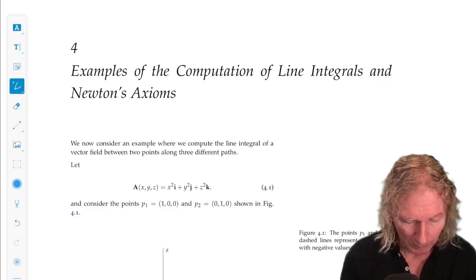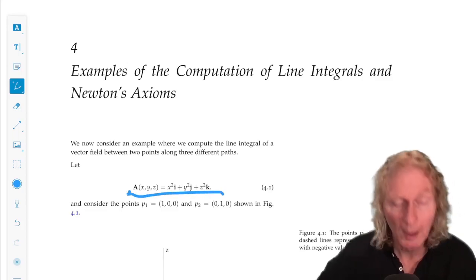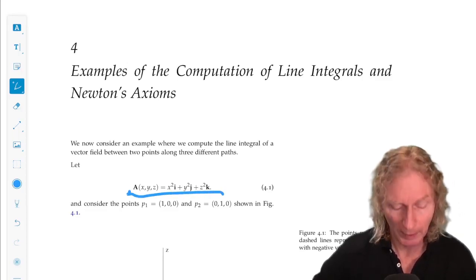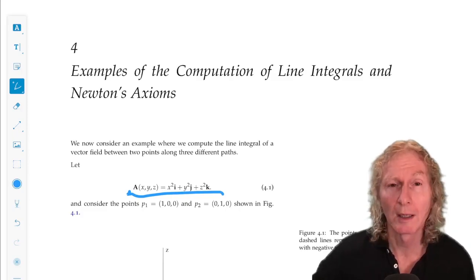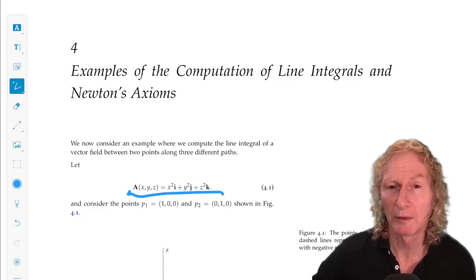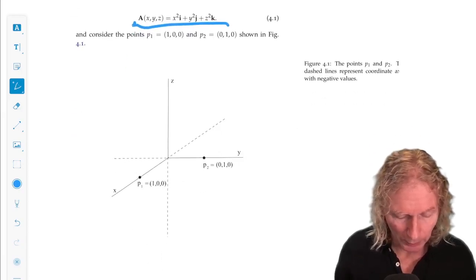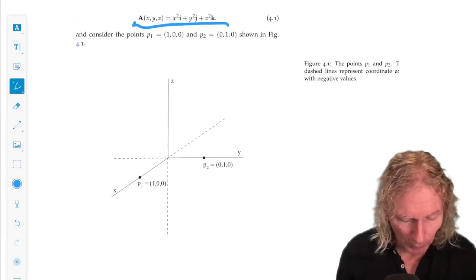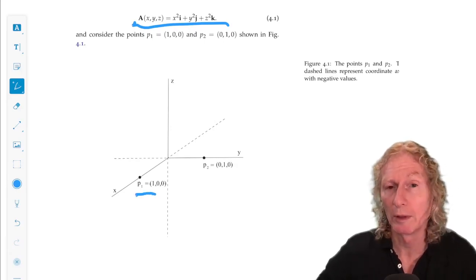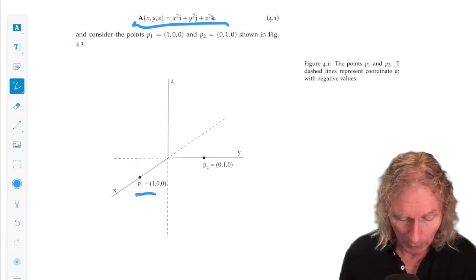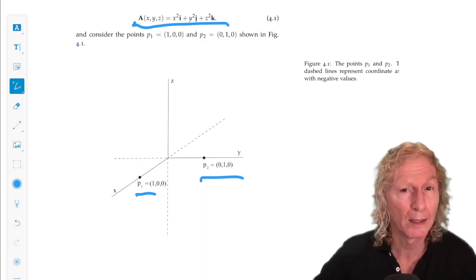Let's consider a vector field of the following form. A of x, y, z is x squared i plus y squared j plus z squared k. And we're going to compute the line integral between two points, P1, 1, 0, 0 on the x-axis, and P2, 0, 1, 0 on the y-axis.